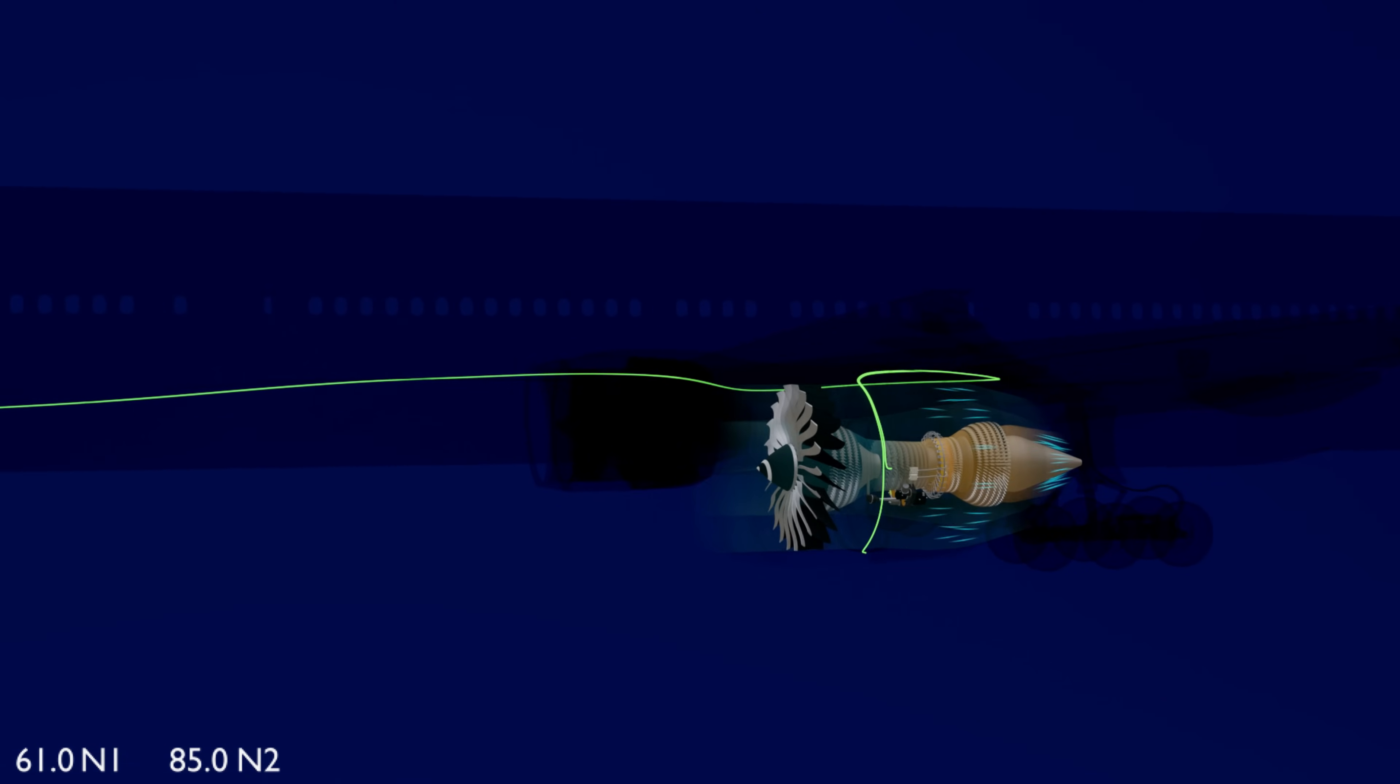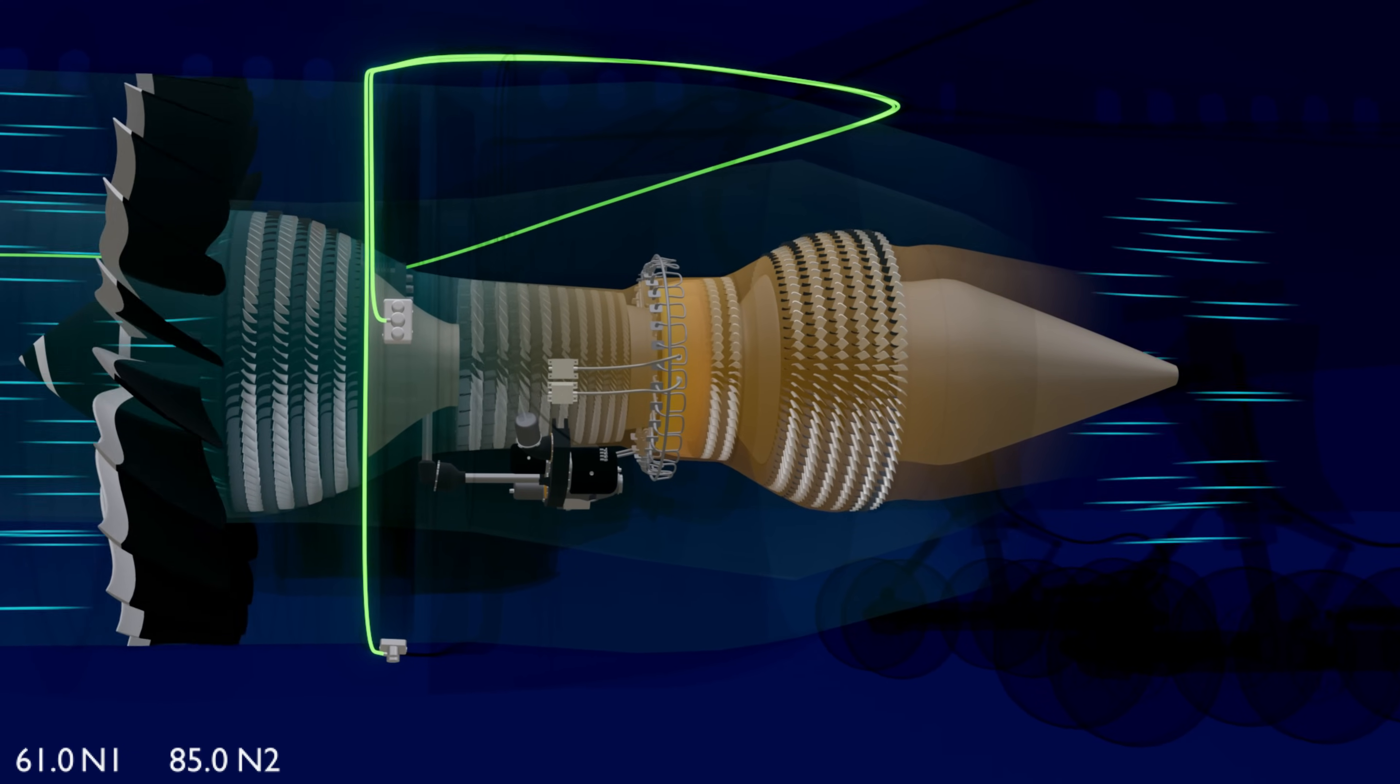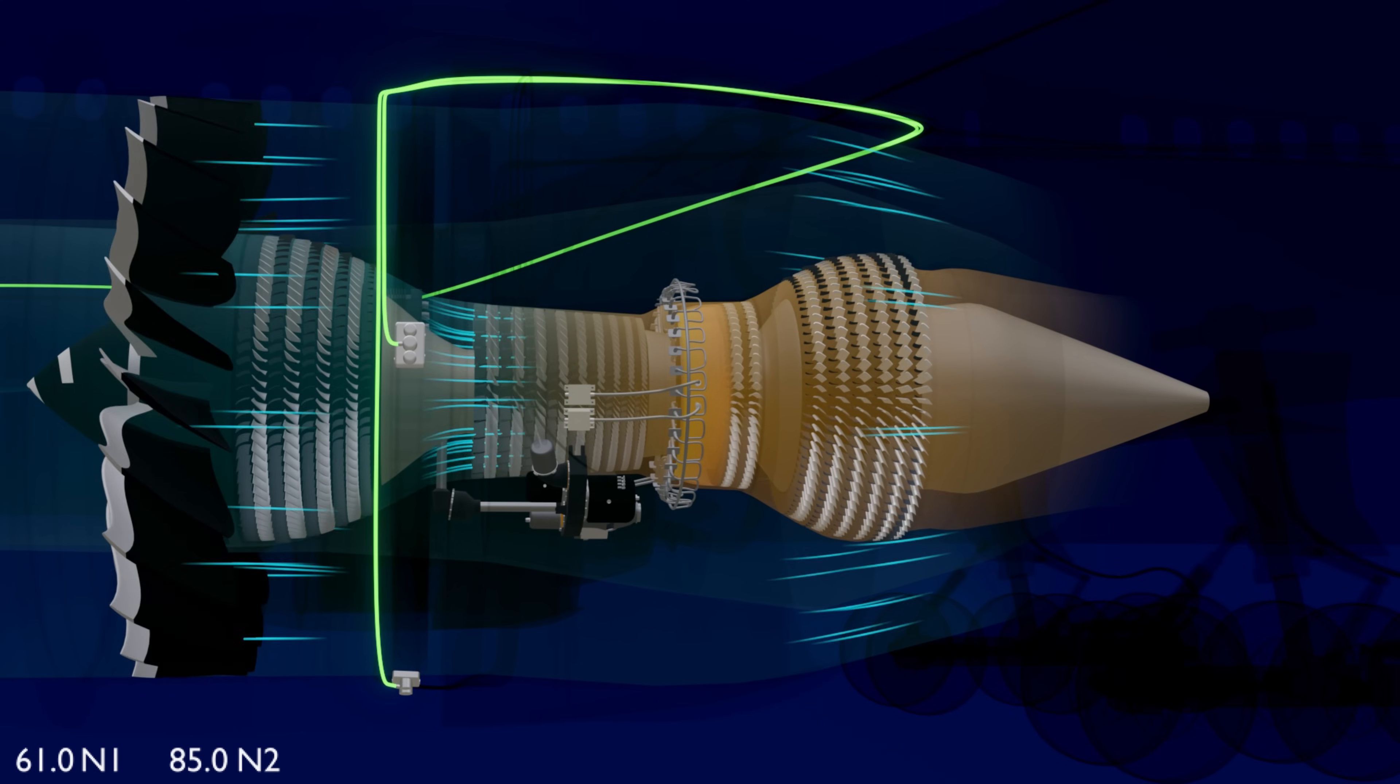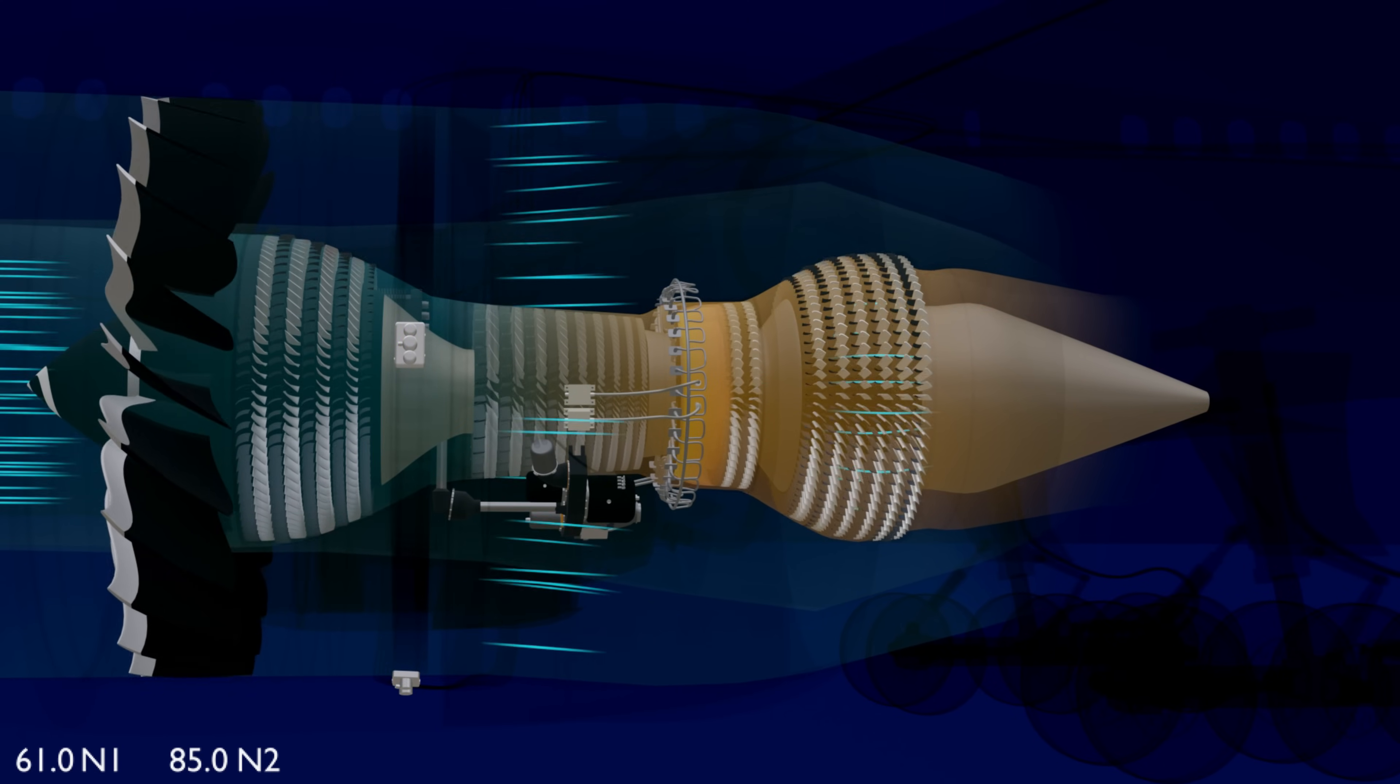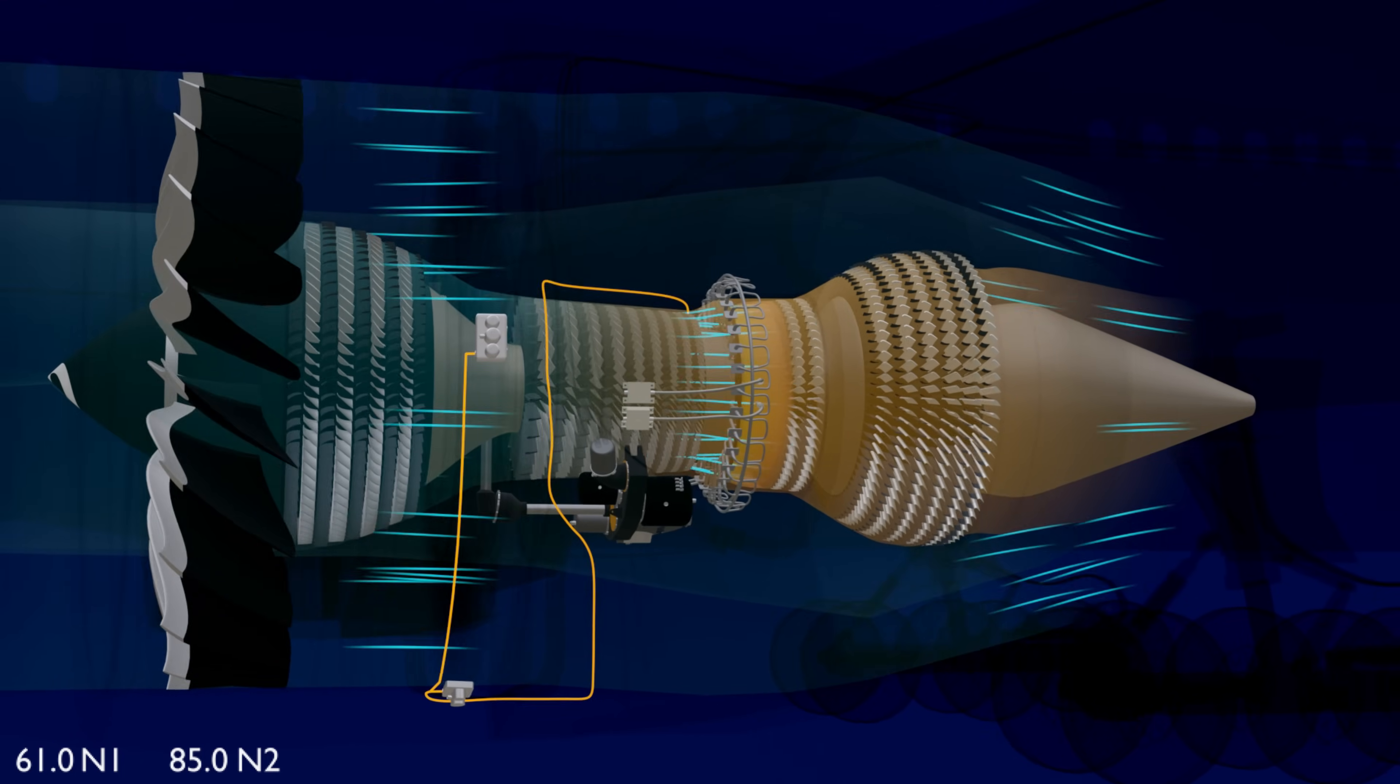The ASCPC computer controls the engine bleed with the help of two electro-pneumatic controllers. The controllers take pneumatic line pressure from the high pressure compressor stage and use it to operate several valves of the bleed system.